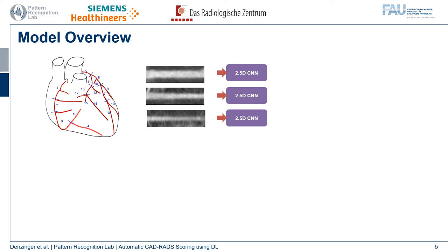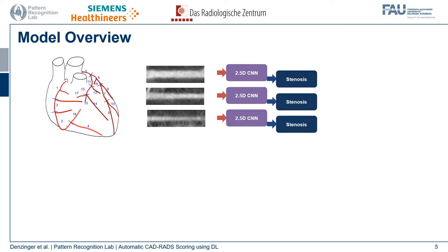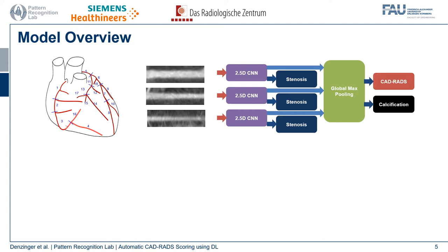To reduce the size of the input, we use a 2.5D convolutional neural network, which takes two orthogonal cross-sectional views of our MPR volume stack as input. After extracting features for each sub-segment, we use a multi-layer perceptron to regress the stenosis degree of each sub-segment. These features are also combined using a global max pooling operation, which is well motivated by the definition of the CAD-RADS score — corresponding to the most severe lesion within the patient. The CAD-RADS score is then regressed from this pooled feature representation, together with a classification score as an additional auxiliary target.